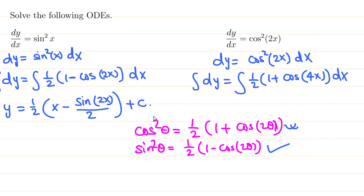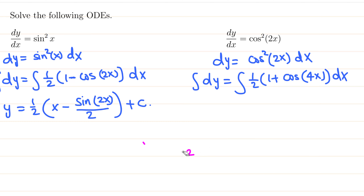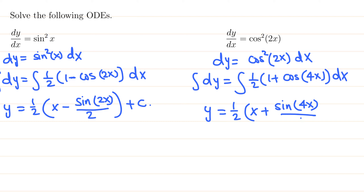Integrating both sides: y equals one half times the anti-derivative of 1, which is x, plus the anti-derivative of cosine 4x, which is sine 4x divided by 4, plus c. So the final answer is y equals one half (x plus sine 4x over 4) plus c.